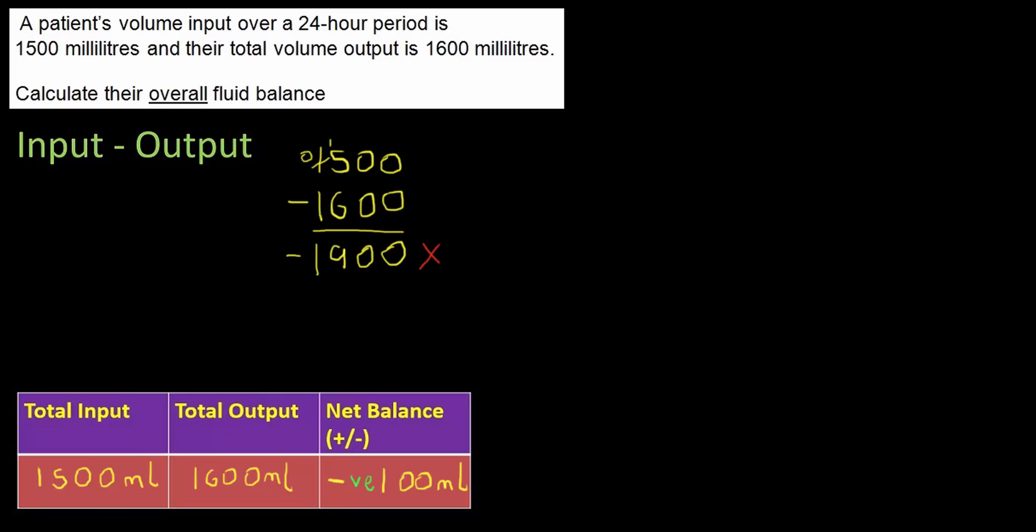In other words the column method for subtraction will not give the correct answer for negatives. What you have to do is understand from our table alone 1,500 take away 1,600 that our answer will be negative so we put the negative in place but then what we do is to work out the value of that negative balance using our column method we must put the larger number first and we know from our previous example that 1,600 take away 1,500 is 100 but we've already pre-loaded that minus sign in there so our answer would be negative 100 millilitres.